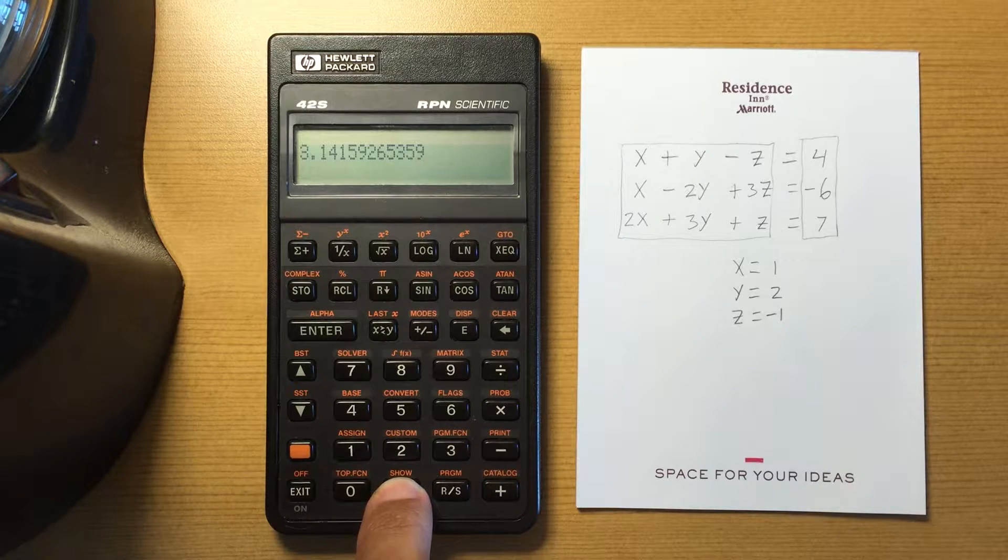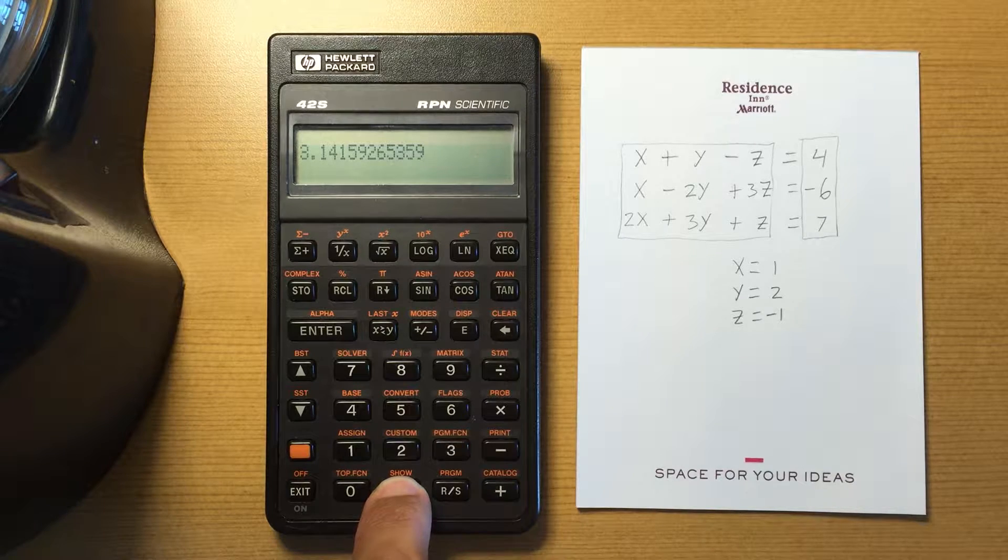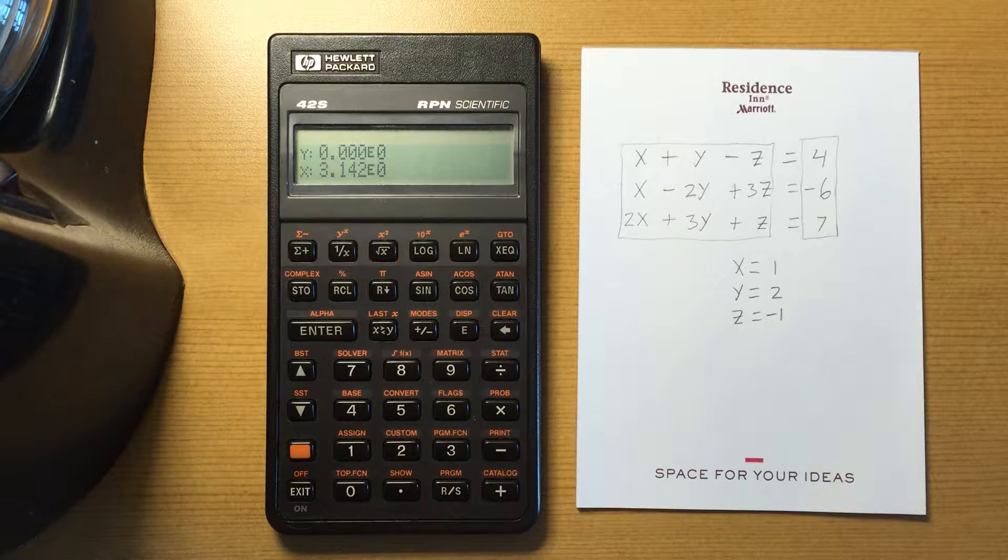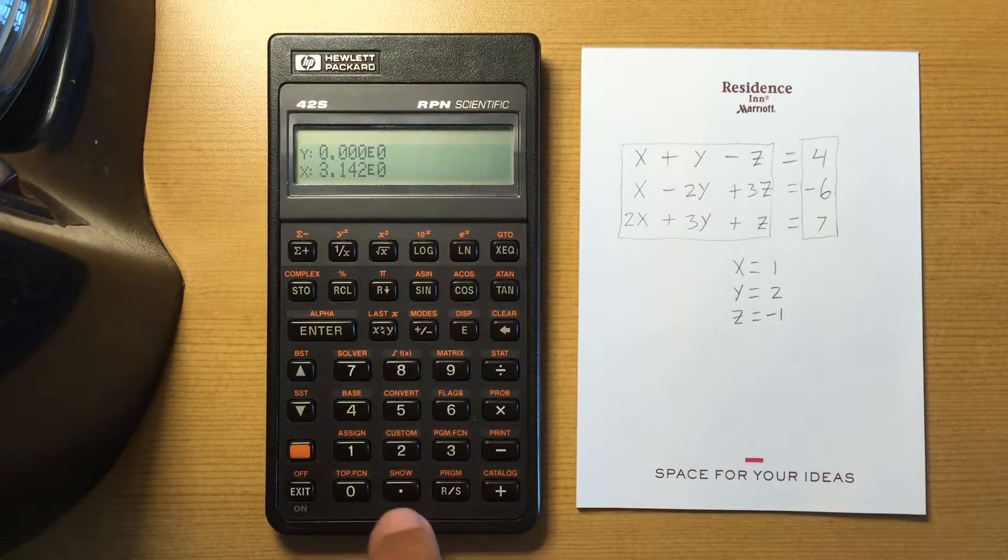If I hold it down then it will keep showing it, otherwise it'll just show for about a second and then disappear. I find it less cluttered if I just work with a few decimal places and then if I want to see greater accuracy then I just show it.